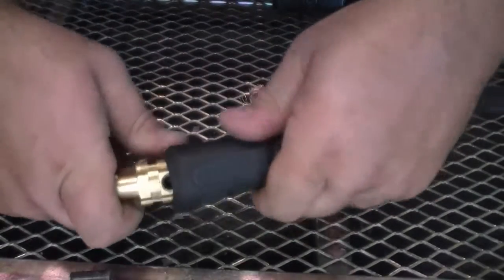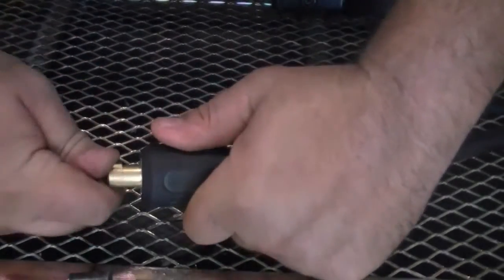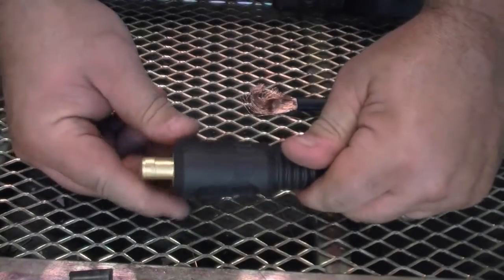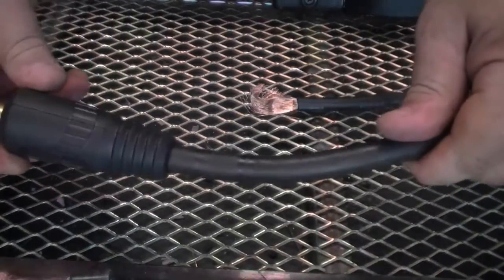The cover should go on more easily than it came off. Push the cover forward until it snaps into place. When finished the cover should be flush with the face of the connector.